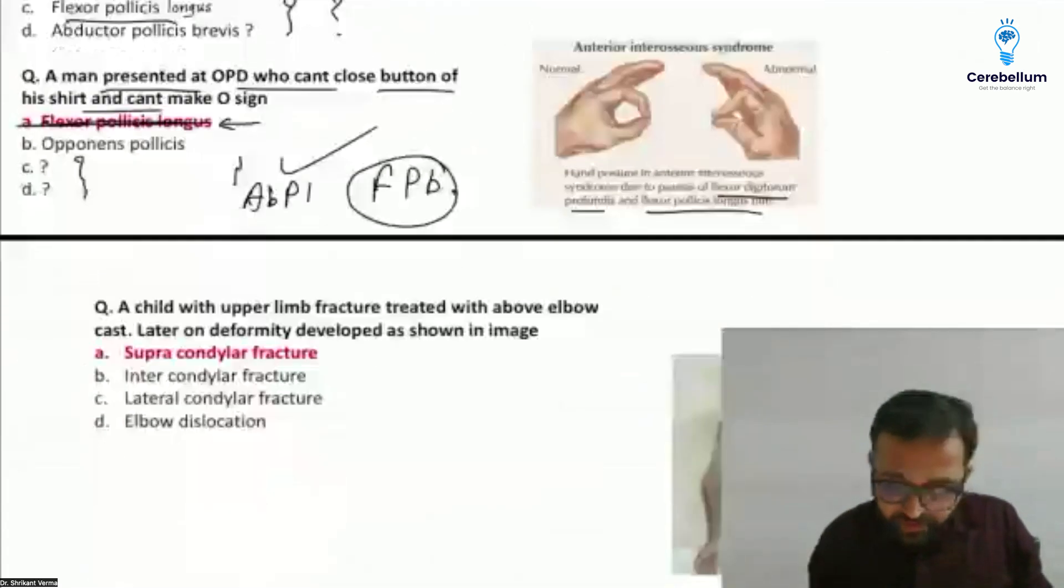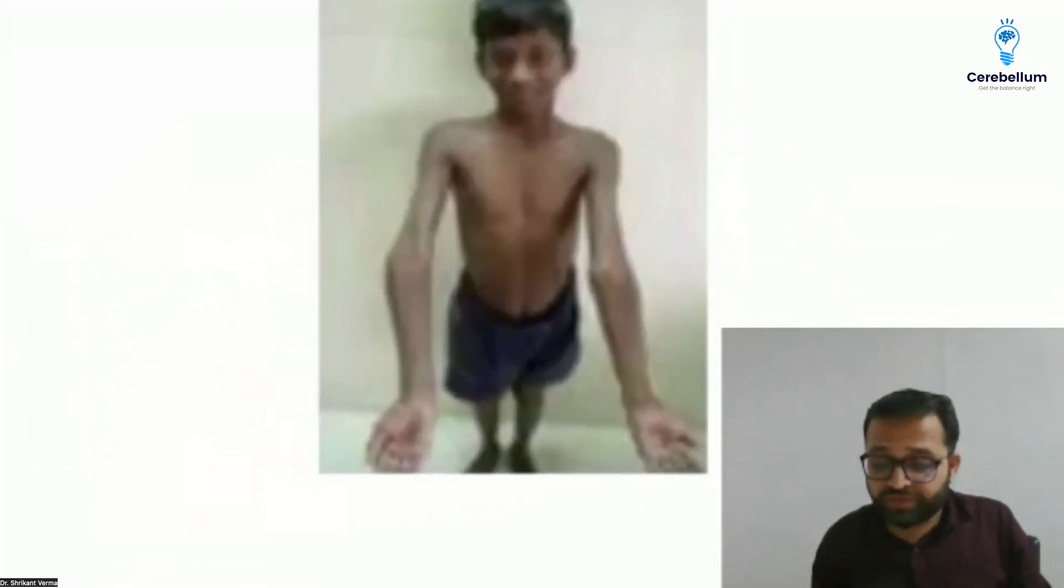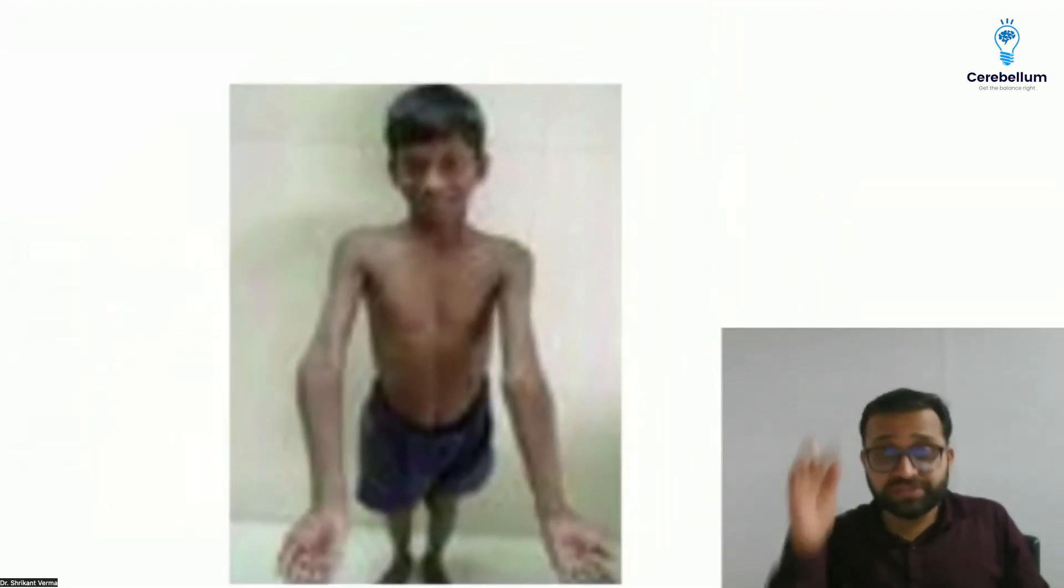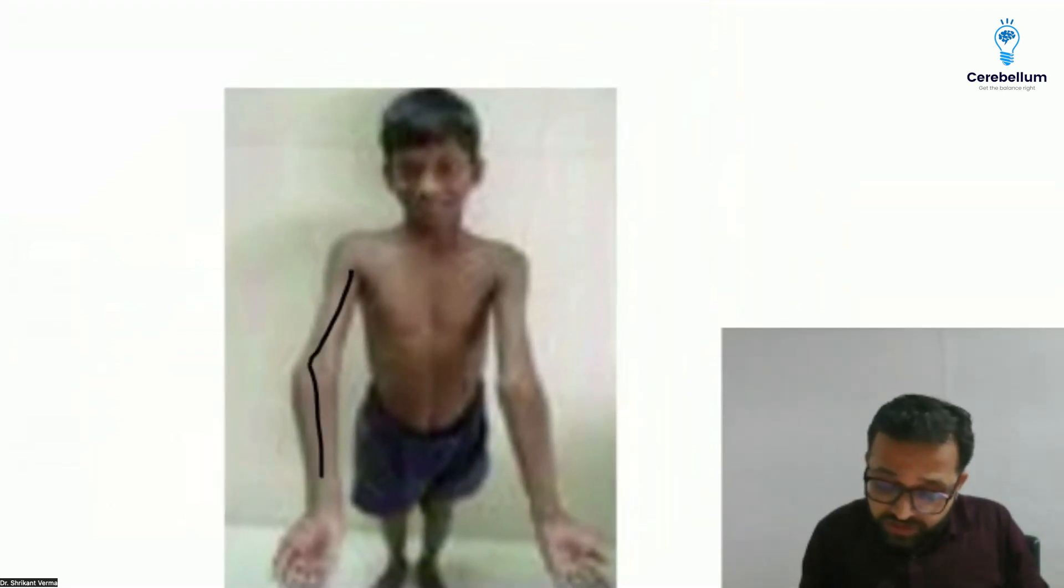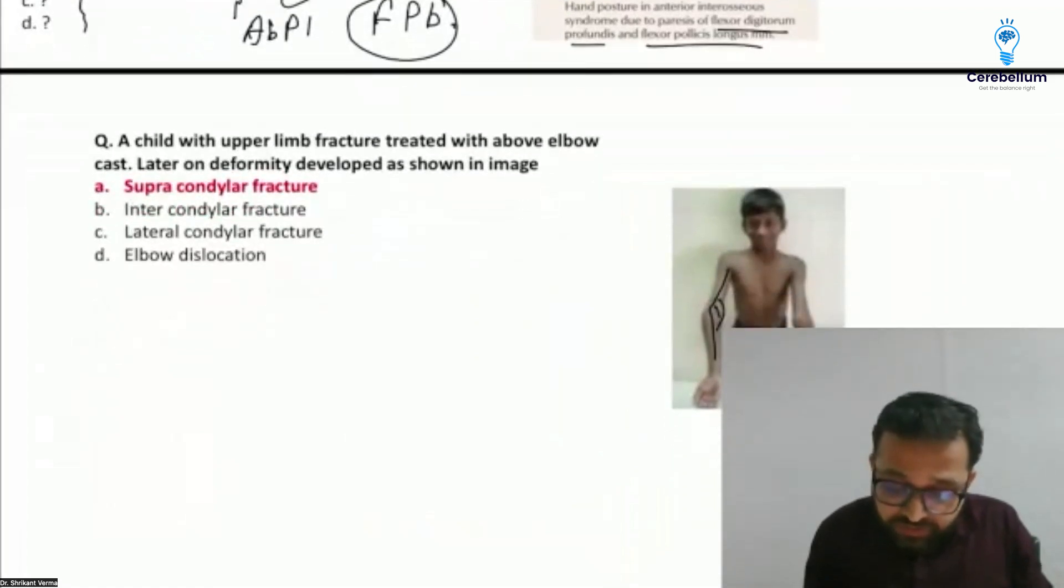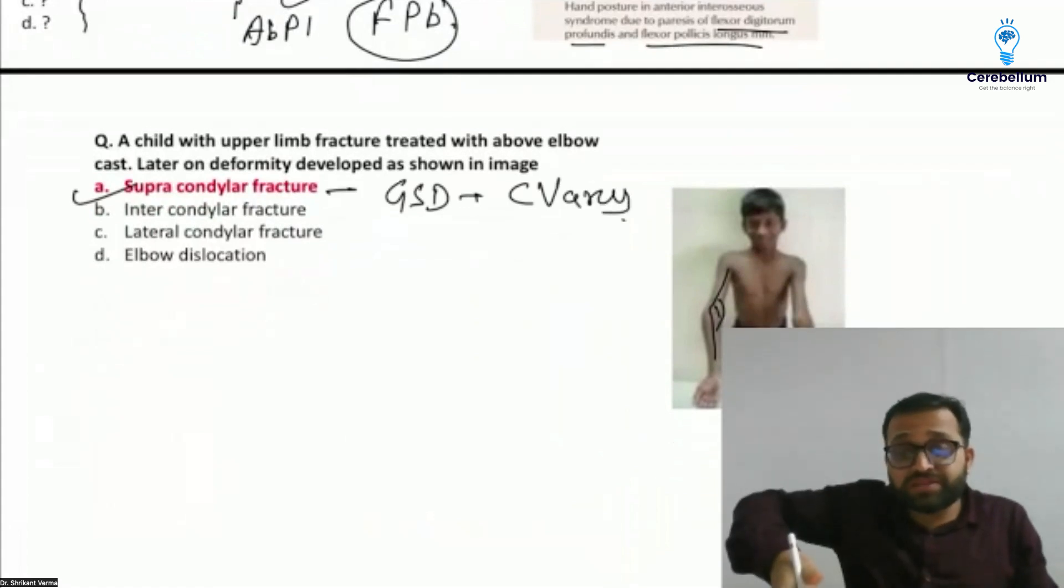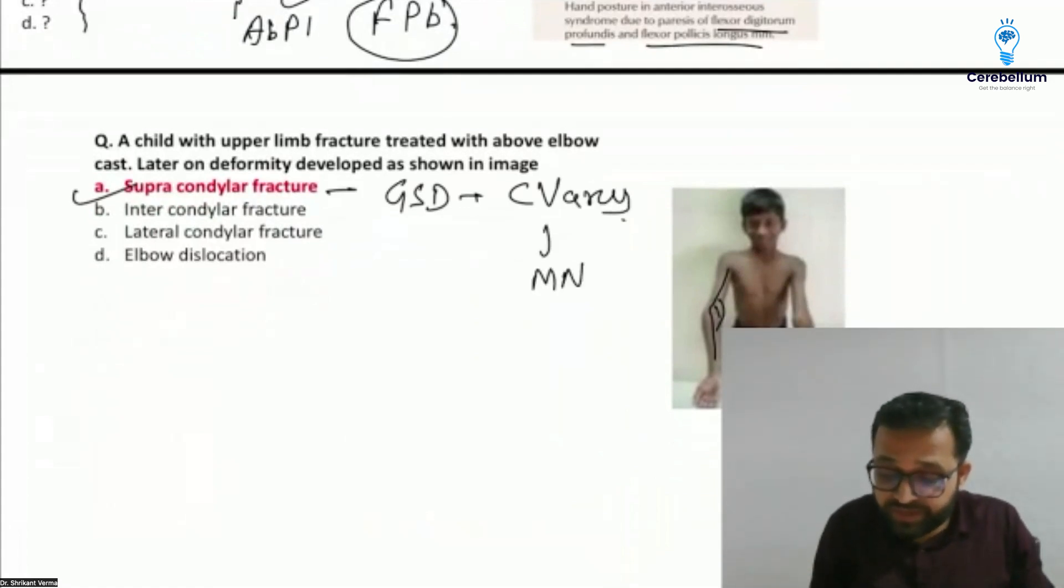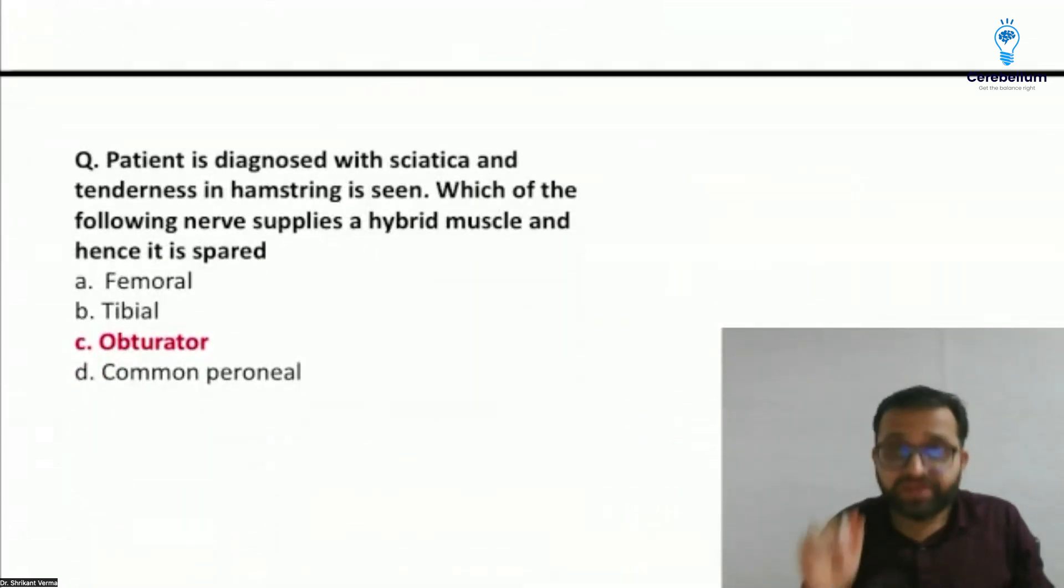This is the orthopedic question, also many times we discuss in our anatomy. This is our gunstock deformity. It is cubitus varus, found in case of the supracondylar fracture. Gunstock deformity there is cubitus varus. Cubitus valgus is ulnar nerve, cubitus varus is median nerve damage.